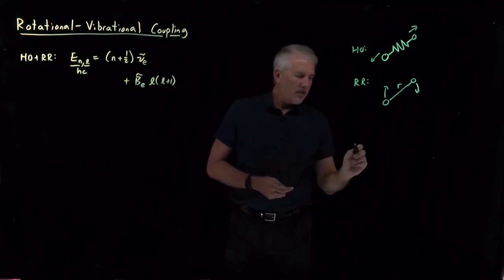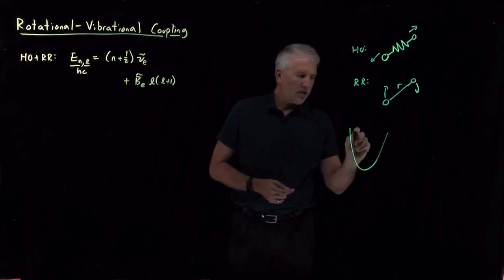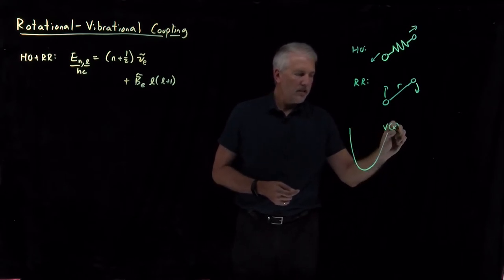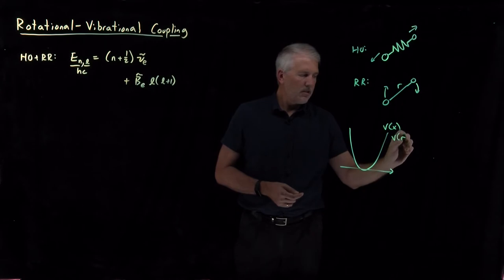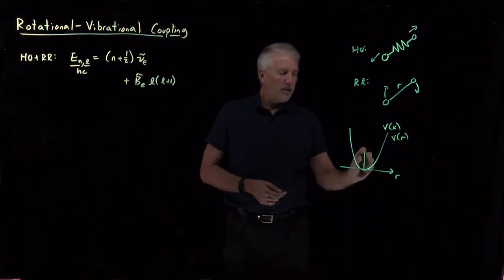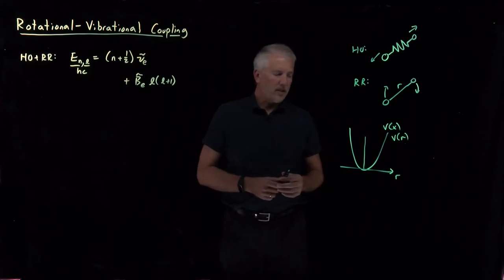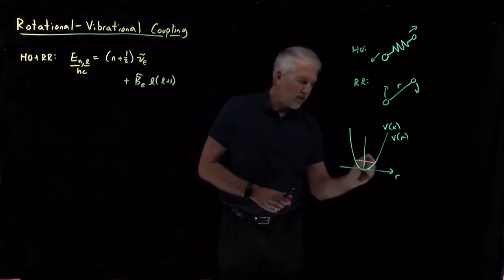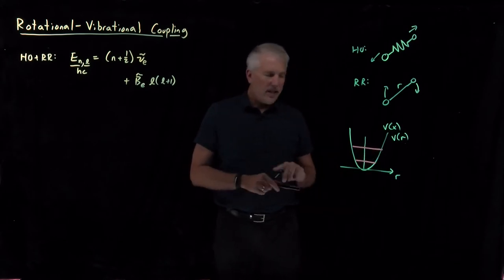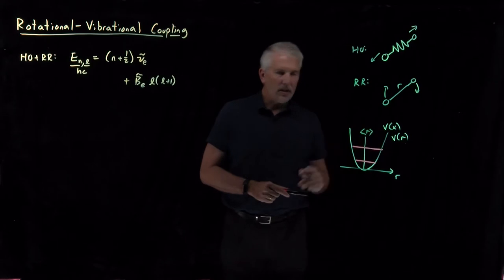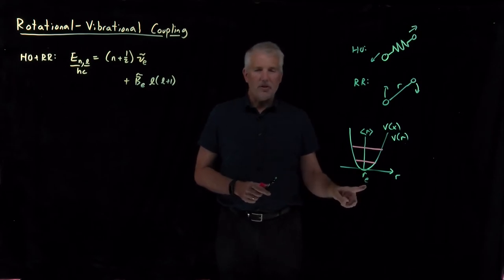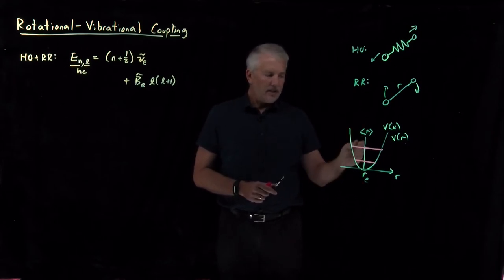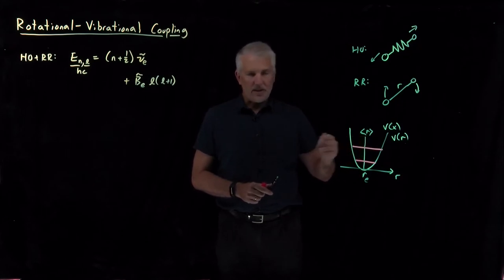To see why that's true, let's draw a cartoon of the potential energy for a harmonic oscillator — V of X, or V of R, for the bond length of this molecule. Because it's a perfectly symmetric harmonic oscillator, in the ground state, first excited state, or any energy level, the average bond length equals the bond length at the minimum of the well, R sub E. It stretches an equal distance on the positive side as it compresses on the negative side.